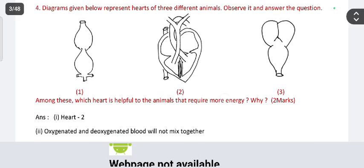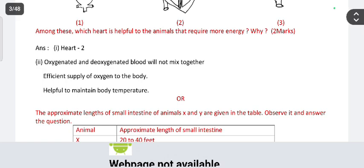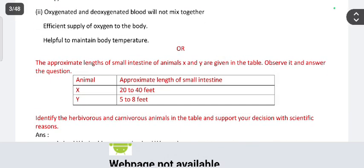Among them, which is helpful to the animal that requires more energy and why? The answer is: oxygenated and deoxygenated blood will not mix together, allowing efficient supply of oxygen to the body, which is helpful to maintain body temperature. This is also a three-marks question.